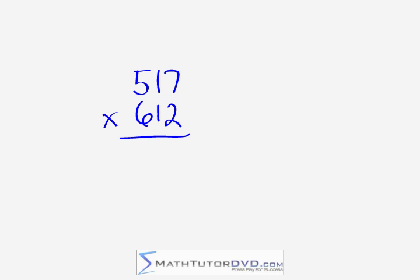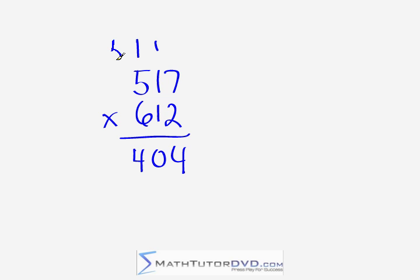Our next problem is 517 times 612 — the problem from the opening. Start in the right-hand column: seven times two is fourteen — put a four, carry a one. Criss-cross: seven plus two gives nine, plus the carried one gives ten. Three-way criss-cross: seven times six is forty-two, five times two is ten, so forty-two plus ten is fifty-two, plus one is fifty-three, plus the carry is fifty-four — put a four, carry a five. Leading criss-cross: six plus five is eleven, plus five is sixteen — put a six, carry a one. Leading multiplication: six times five is thirty, plus one is thirty-one. The answer is 316,404.